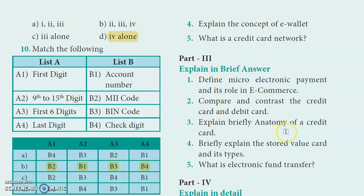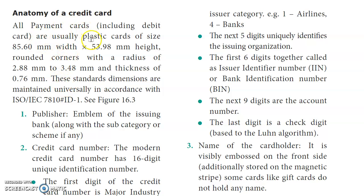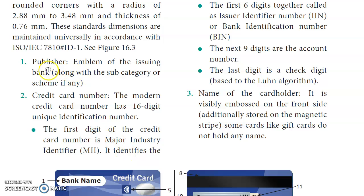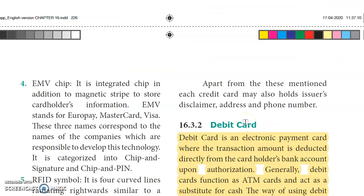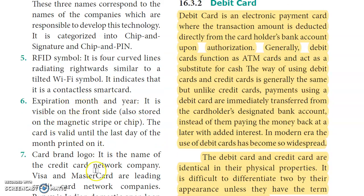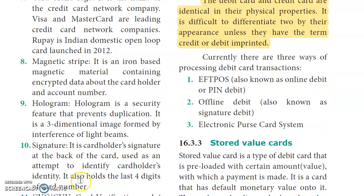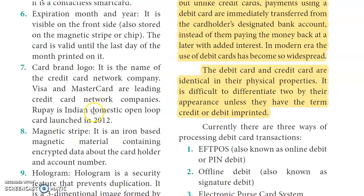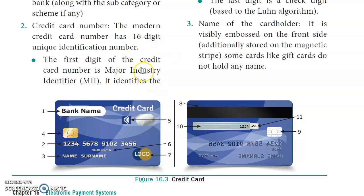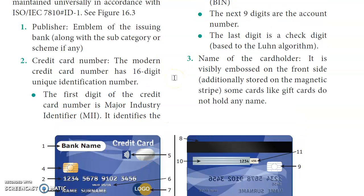Part 3, third question: Explain briefly the anatomy of a credit card. A credit card has 11 points: the publisher's name, emblem of the issuing bank, credit card number, name of the cardholder, EMV chip, RFID symbol, expiration month and year, card brand logo, magnetic strip, hologram, and finally the CVC or CVV of the card. These 11 parts make up the anatomy of a credit card.